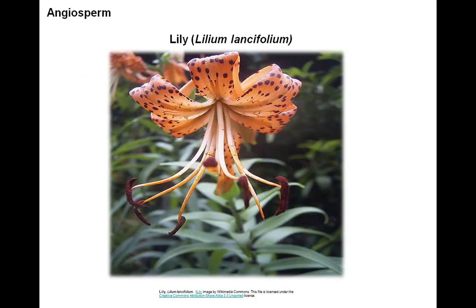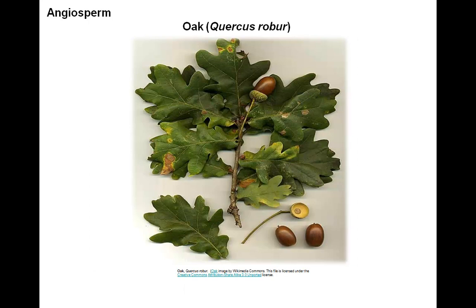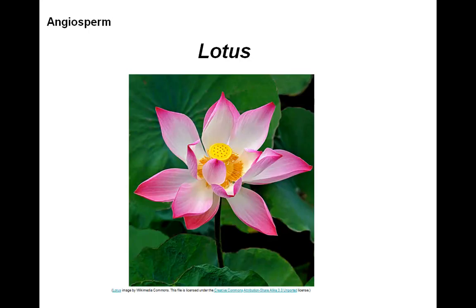Here are some examples of angiosperms. Here is a lily. Grasses are angiosperms where the seeds contain endosperm. Oak trees are also examples of angiosperms — acorns are actually the fruits which protect the seeds. And then the lotus flower, which you will see in water gardens and lily pads.